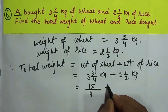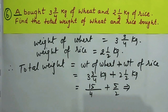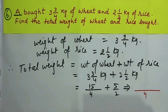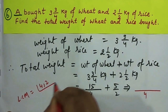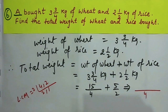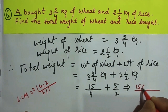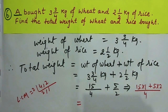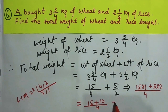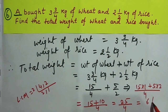This gives 15/4 plus 5/2. Taking the LCM of 4 and 2, which is 4, we get 15 × 1 plus 5 × 2, which equals 15 plus 10 over 4, giving 25/4, or 6 and 1/4 kg as your solution.